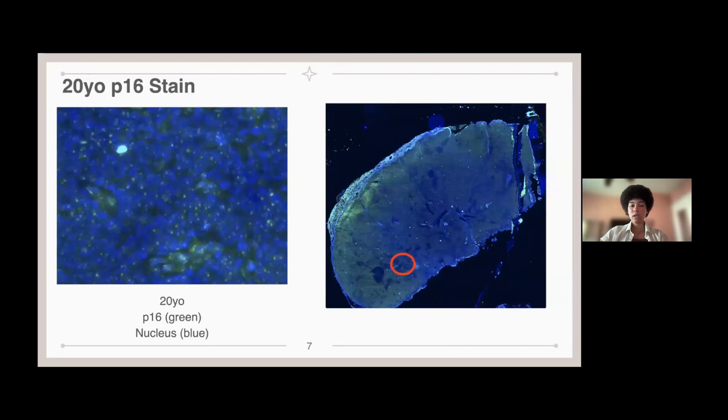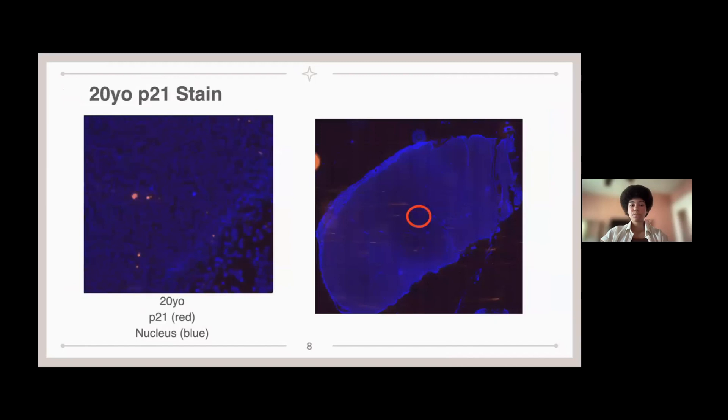And so as you can see in the 20-year-old, most of this is background, and there's not as much P16 within the nucleus, indicating not as many senescent cells and a lesser version of the P16 compared to the 68-year-old.